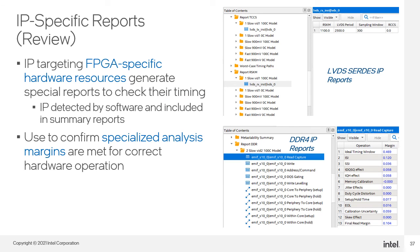There are IP-specific reports you can generate when using either the LVDS SERDES IP core or the hard memory interfaces. These reports give you a timing analysis of these IPs and the slack margin you have. For the SERDES core, there is the receiver input skew margin, abbreviated as the RSKM value. For the memory interfaces core, there are significantly more numbers to review to ensure your interface is meeting timing.